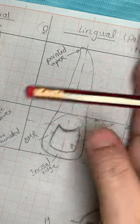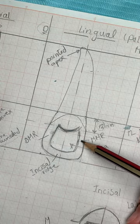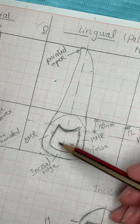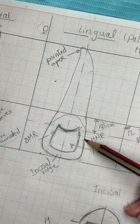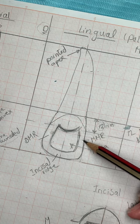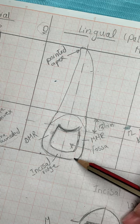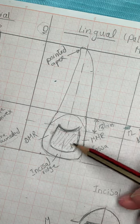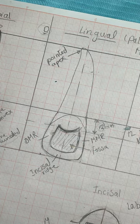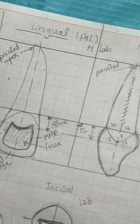I need thicker marginal ridges because the upper lateral incisor is more developed than the central. So make thick marginal ridges and even the incisal ridge. Totally, the ridges should follow the outline of the crown and fold the outline of the incisal ridge. In the rest it will be the fossa, which will be deeper than that of the maxillary central incisor.